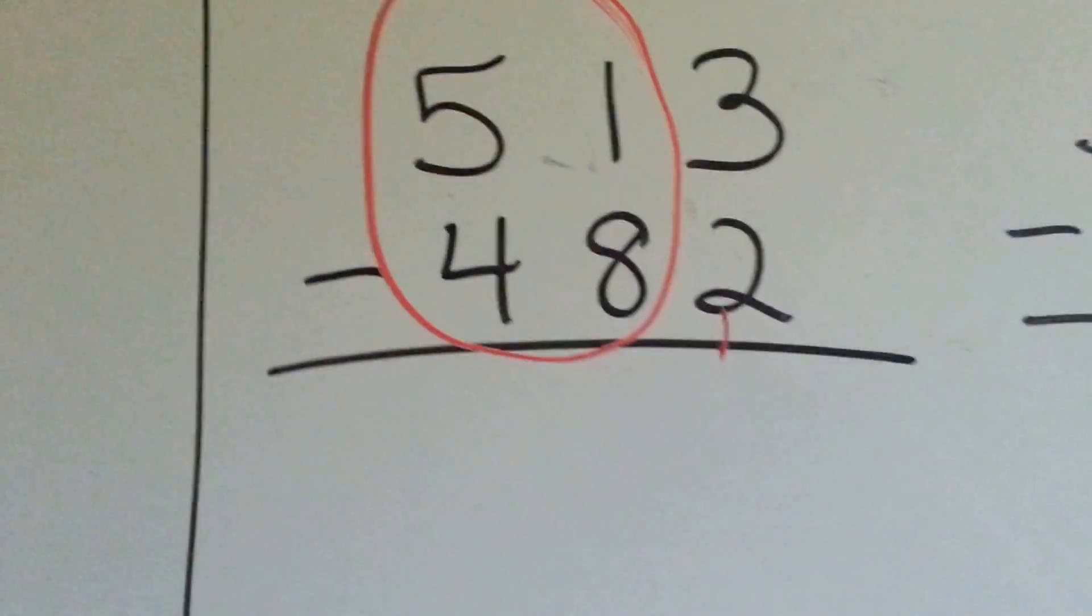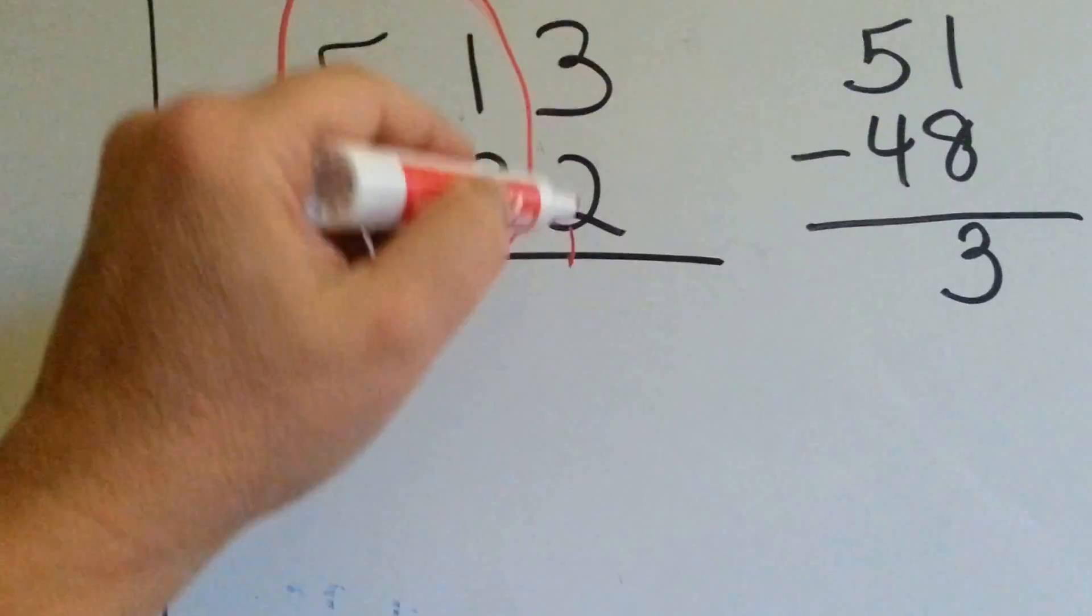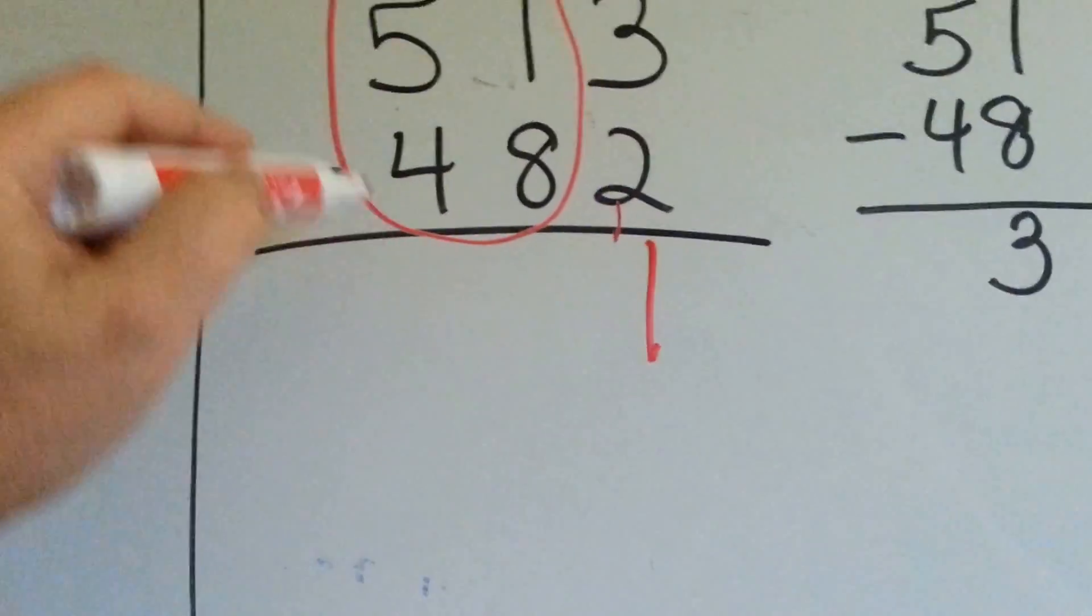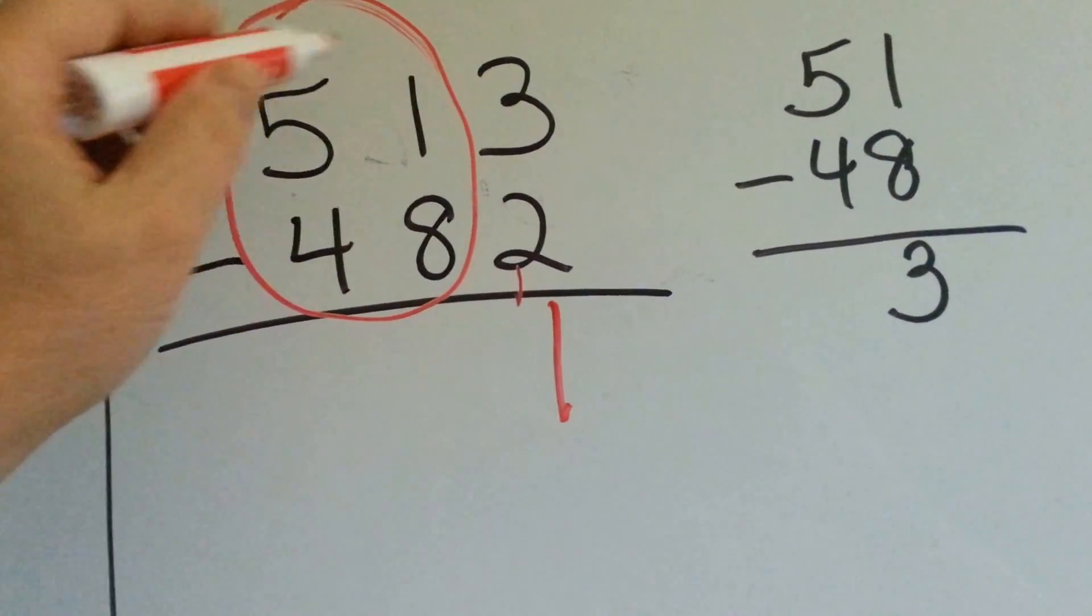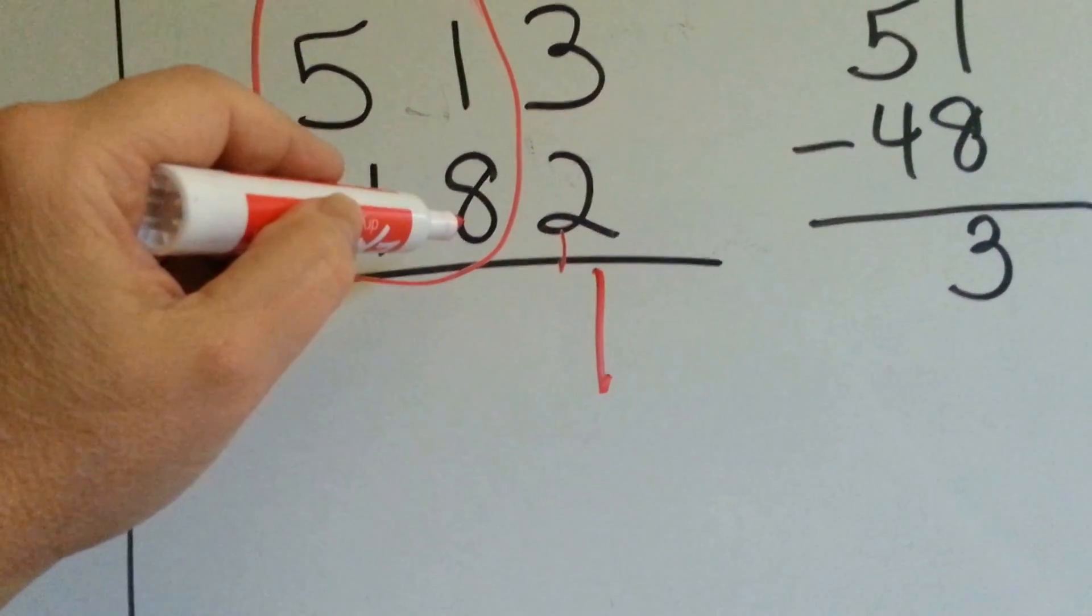51 minus 48? We can easily do 3 take away 2 as 1. But 51 take away 48, you wouldn't want to have to borrow from the 5 to give it to the 1, then do the subtraction.